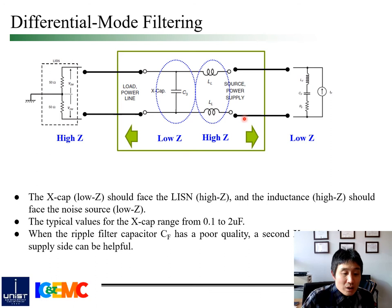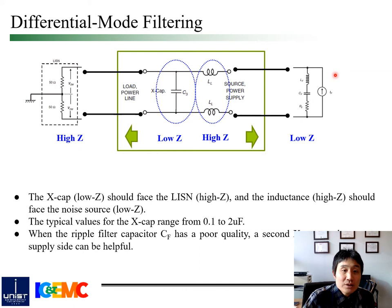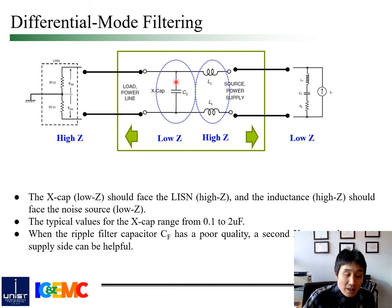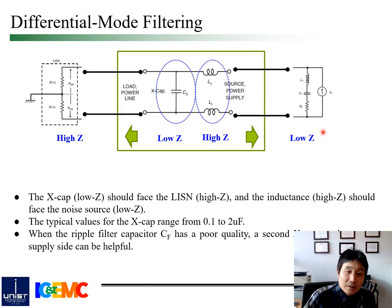Similarly, the required filter configuration for differential mode conducted emission filtering is obtained. Here, the impedance of DC link capacitance is relatively low, so the series differential mode inductance should face this noise source. Conversely, the impedance of the series connected receiver can be treated as high impedance, and large shunt capacitance should face the receiver side. The shunt capacitance between two power lines is called X capacitance. It is not directly related to safety problems, and a large value of X capacitance is allowed, such as from 0.1 to 2 microfarad.